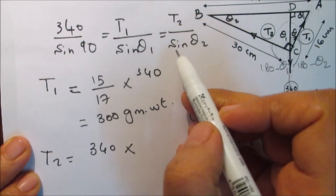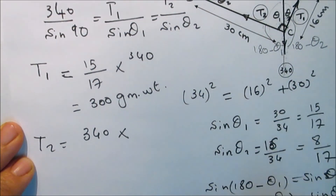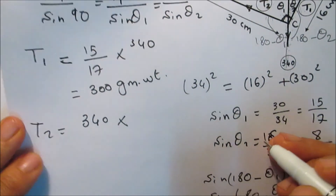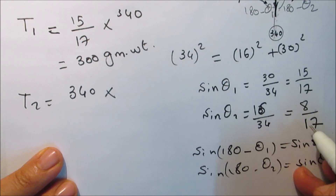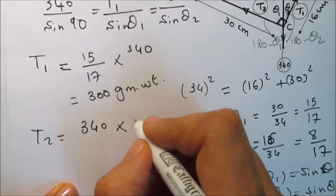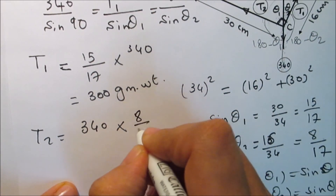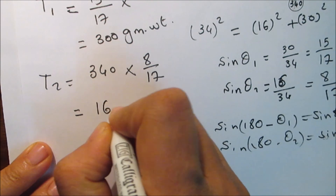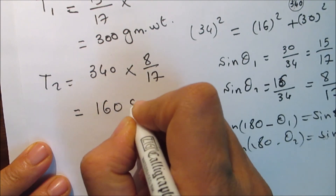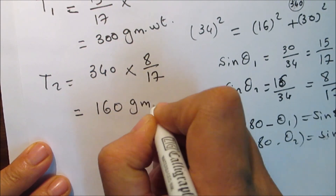Similarly, T2 equals sine θ₂ times 340, where sine θ₂ = 8/17, so T2 equals 8/17 times 340 = 160 gram-weight.